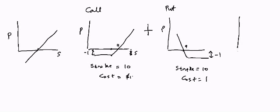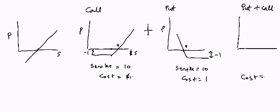If we combine both a put and a call together, that is what we call a butterfly spread. In this case, you buy both a put and a call, so your total investment will be $2 — $1 for the put and $1 for the call — meaning your maximum loss will be minus $2.